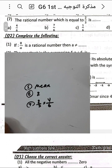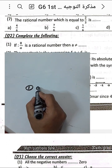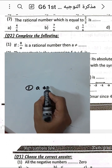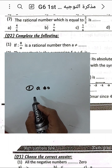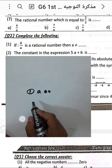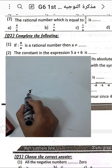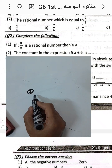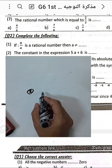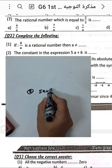Question number two: if a over b is a rational number, then a must not equal zero, because a number divided by zero is undefined. So a here would not equal zero.